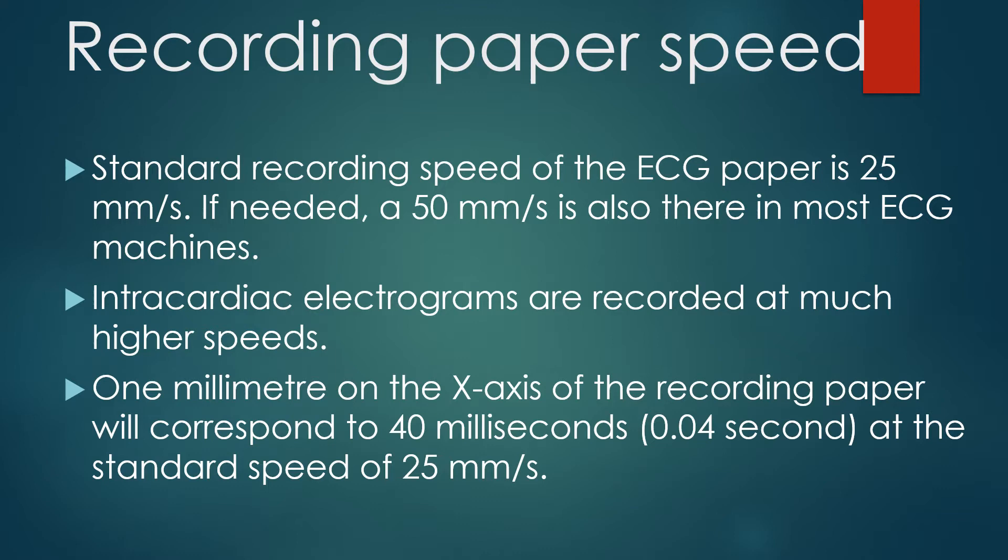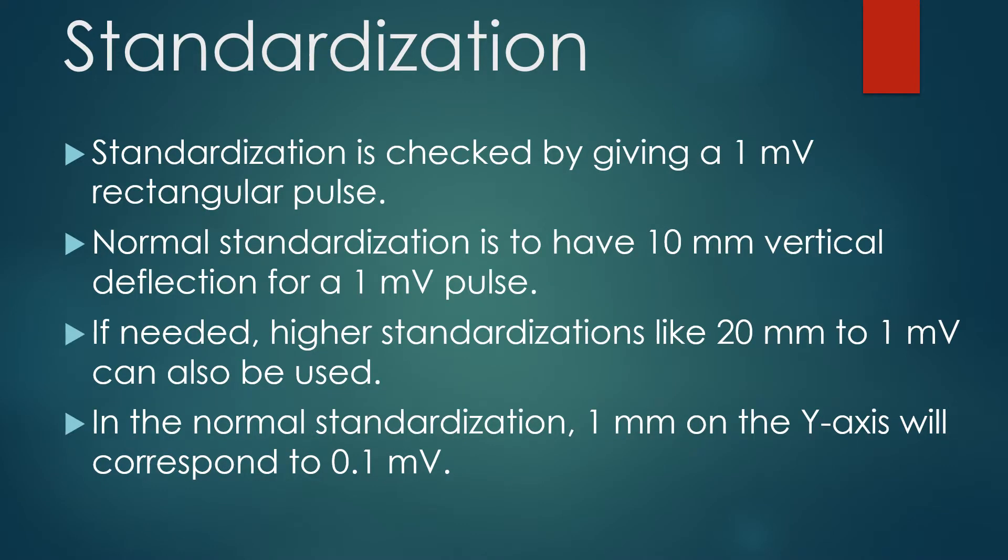Intracardiac electrograms are recorded at much higher speeds. One millimeter on the x-axis of the recording paper corresponds to 40 ms or 0.04 seconds at the standard speed of 25 mm per second. Standardization of the ECG machine is checked by giving a 1 mV rectangular pulse. Normal standardization yields a 10 mm vertical deflection for a 1 mV pulse. Higher standardizations like 20 mm to 1 mV can also be used. In normal standardization, 1 mm on the y-axis corresponds to 0.1 mV.